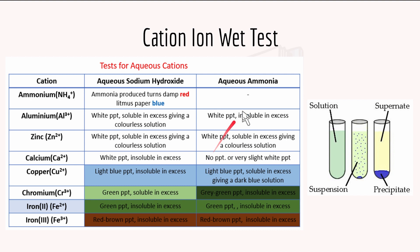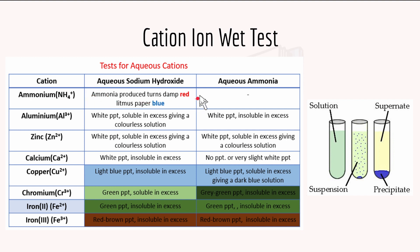Here's the cation wet test. For aqueous cations, we have ammonium which is NH4+. If you add ammonium to aqueous sodium hydroxide, the ammonia produced turns damp red litmus paper blue. You can't use aqueous ammonia to test for it because it's the same substance, so no displacement can happen.